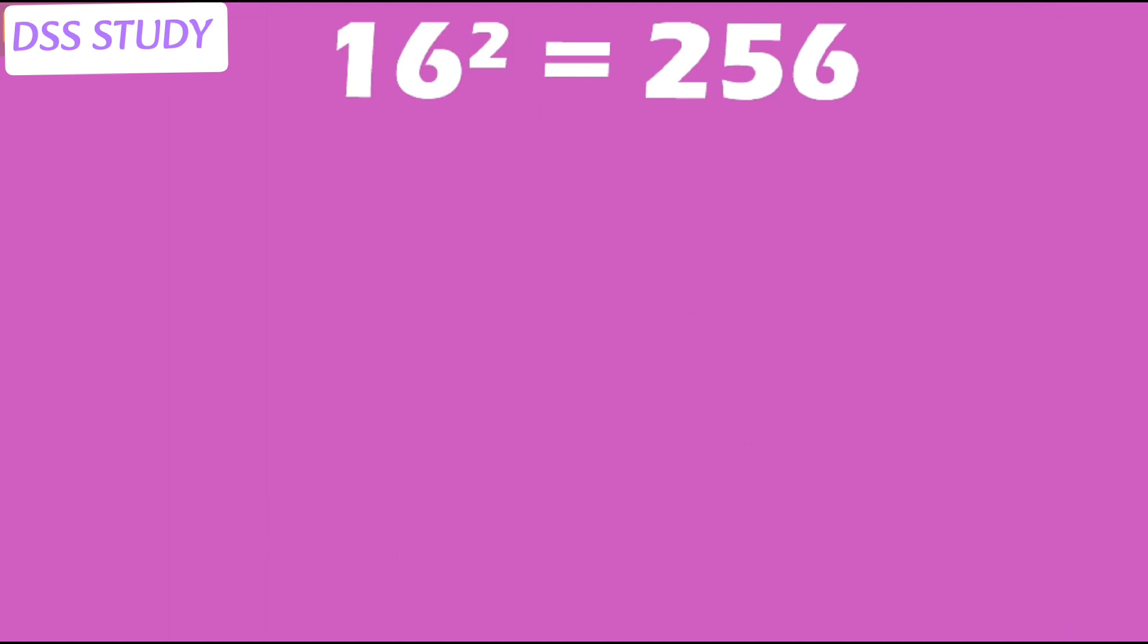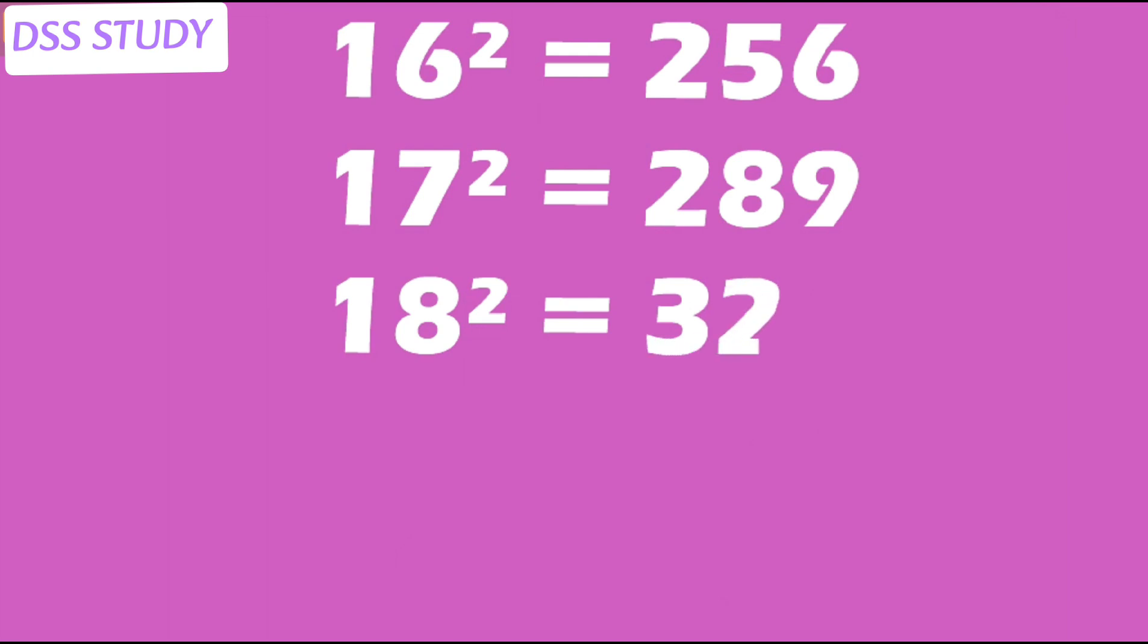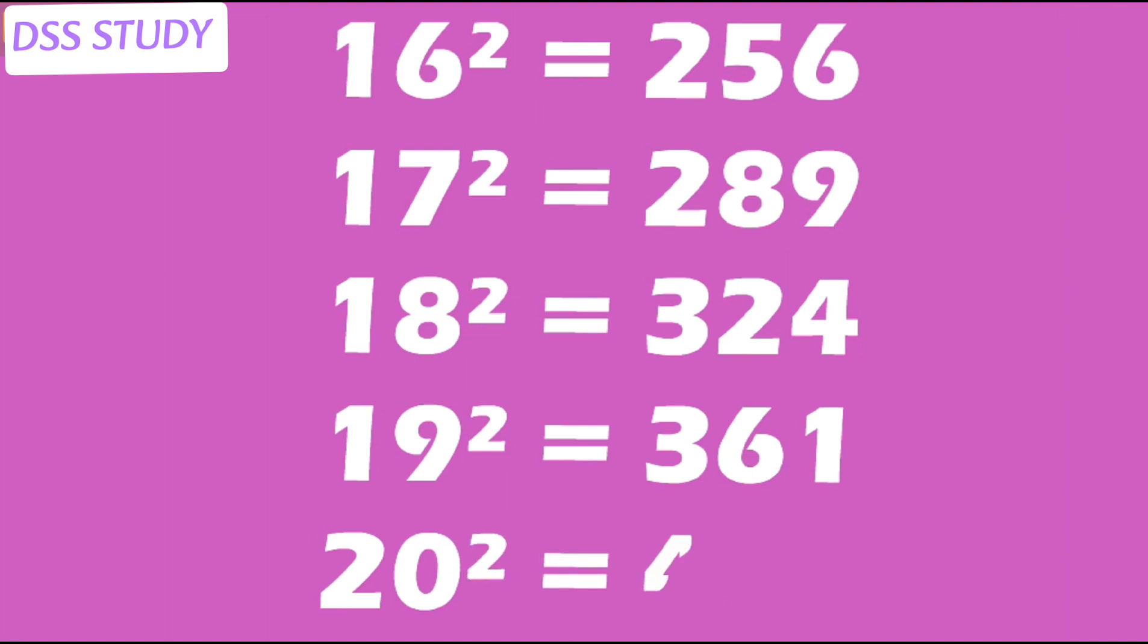Square of 16 is 256. Square of 17 is 289. Square of 18 is 324. Square of 19 is 361. Square of 20 is 400.